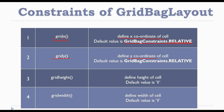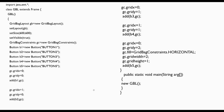The third constraint is gridheight — as the name suggests, it specifies the height of the cell, and its default value is one. The last constraint is gridwidth, which is used to specify the width of a cell, and its default value is also one.